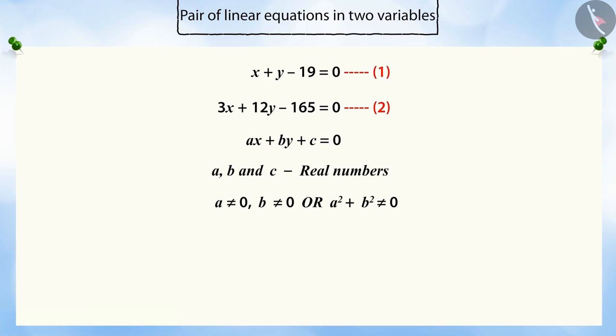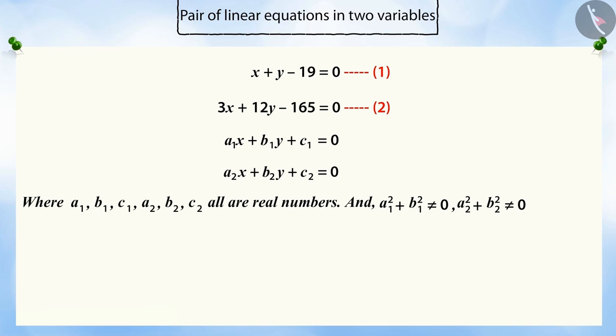We know that in two variables x and y, a into x plus b into y plus c is equal to 0. Hence, the pair of linear equation in the two variables x and y can be represented in a comprehensive way.